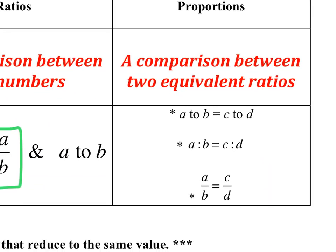It's A to B equals C to D. A colon B equals C colon D. And then lastly, A over B equals C over D. I'm giving you the heads up almost 99.99% of the time, we're gonna be writing it exactly like this.